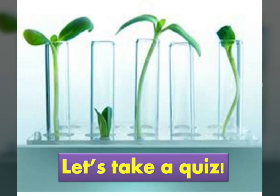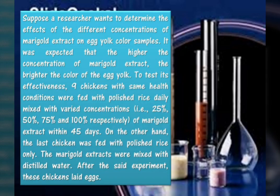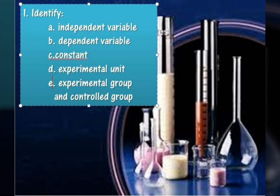Now that we're done with the discussion, let us take this quiz. Suppose a researcher wants to determine the effects of different concentrations of marigold extract on egg yolk color. It was expected that the higher the concentration of marigold extract, the brighter the color of the egg yolk. Nine chickens with the same health conditions were fed polished rice daily mixed with varied concentrations — 25%, 50%, 75%, and 100% — of marigold extract within 45 days. The last chicken was fed polished rice only. The marigold extracts were mixed with distilled water, and after the experiment, the chickens laid eggs. Identify the following: independent variable, dependent variable, constant, and experimental unit.